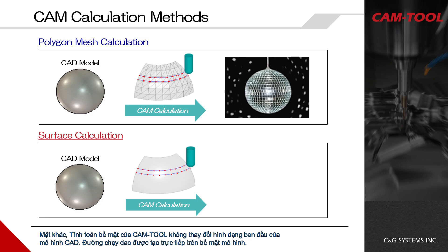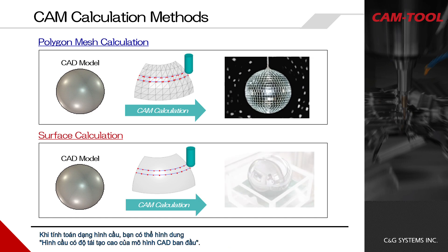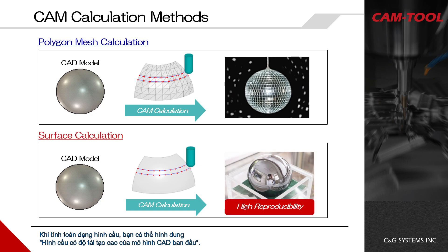On the other hand, CamTool's surface calculation does not change the shape of the original CAD model. The toolpaths are generated on the model surface directly. When calculating a ball shape, you can imagine a sphere — with high reproducibility of the original CAD model.